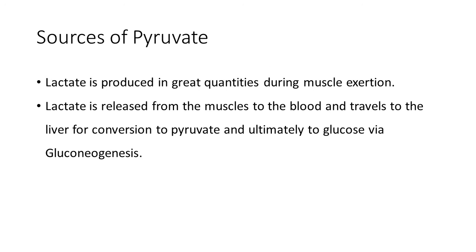One of the main sources of pyruvate is lactate, which is produced in great quantities during muscle exertion, as it is mentioned in the glycolysis video — it is a product of anaerobic glycolysis. Lactate is released from the muscle into the bloodstream and travels to the liver for conversion to pyruvate, and ultimately to glucose via gluconeogenesis.